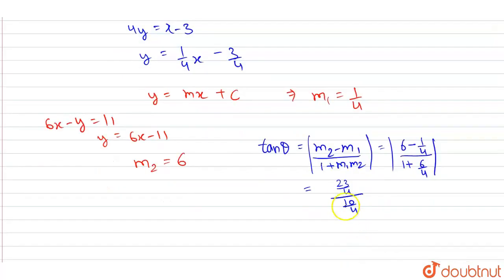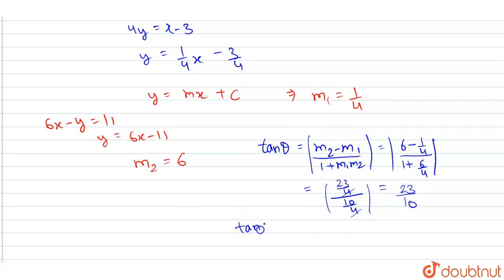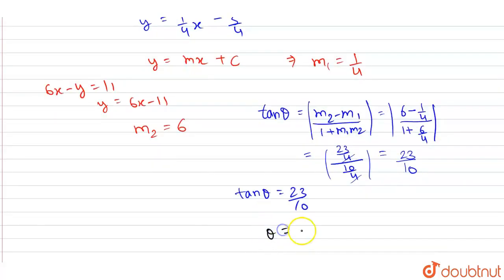Taking LCM. Now this is in our absolute value. Now the 4 in numerator and denominator cancels out, and we will remain with 23 by 10. So our tan theta is equal to 23 by 10. And our theta is tan inverse of 23 by 10. So this is our final answer.